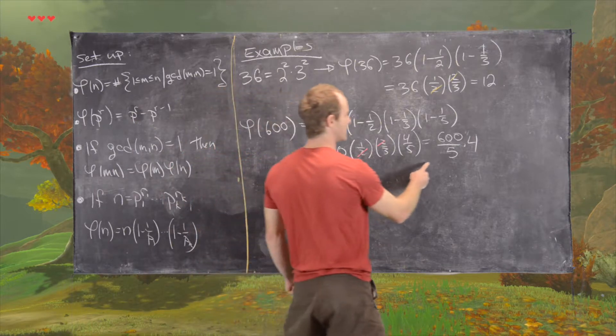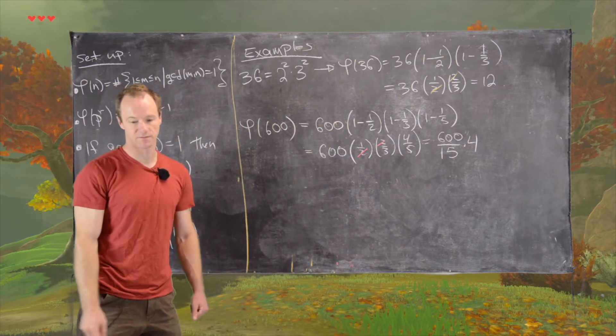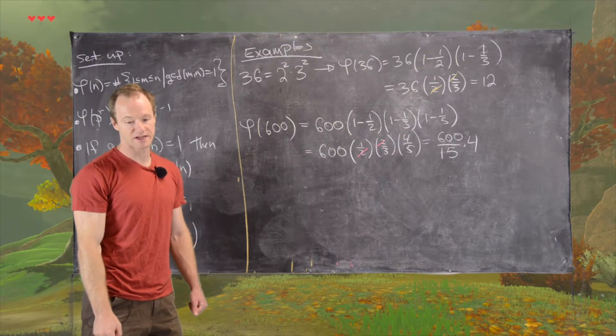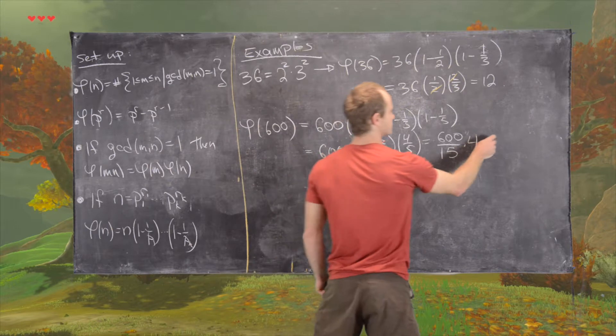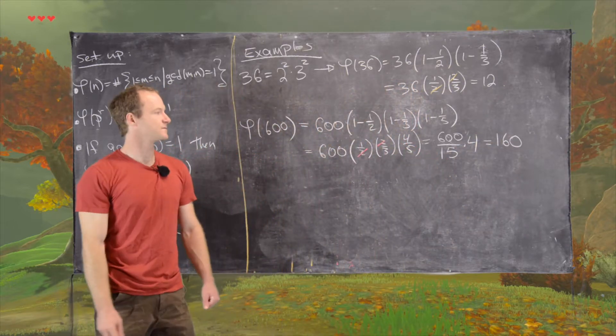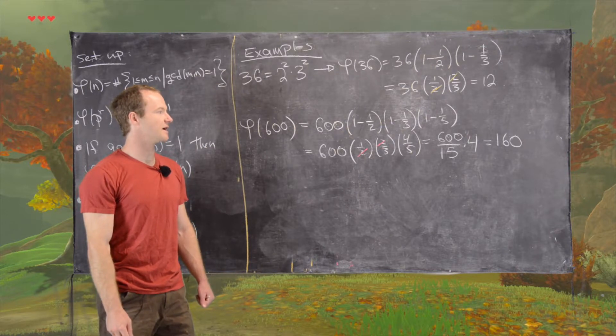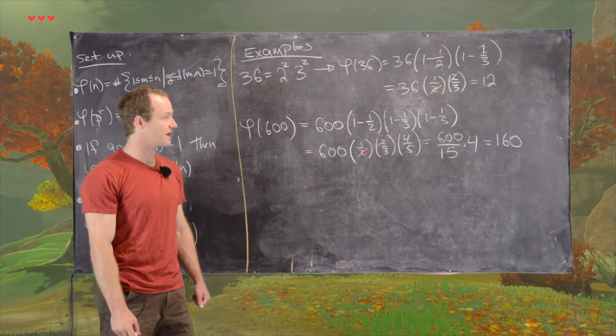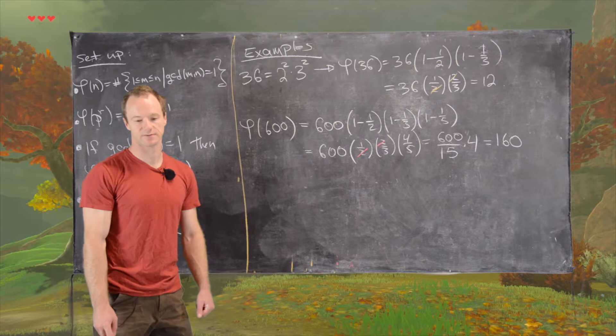So these 2's cancel and we're left with 600 over 5 times 4. Sorry, maybe 600 over 15 times 4. And then we can check that this is equal to 160. So it's maybe easy to check that 600 divided by 5 is 120, and then divided by another 3 is 40, and then multiplied by 4 is 160.